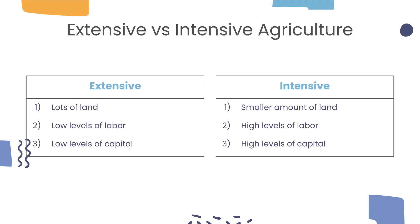What is the difference between extensive and intensive agriculture? Extensive agriculture is agriculture that requires a lot of land, low levels of labor, and low levels of capital. Therefore, it is usually done in areas where land is cheap and can be done far from people, as it requires low levels of labor.